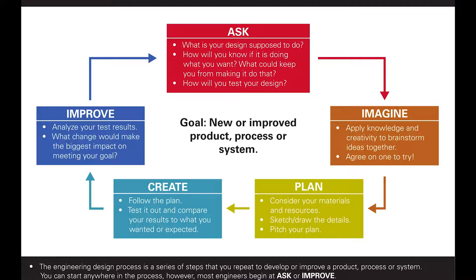Now we need to plan — try drawing or creating 3D models through different programs, and try to gather all the required materials. For instance, concrete aggregates, molding materials, and tools like buckets and trowels. And now we can create the canoe — build it according to your plans and try to stick to them as much as possible, so you know what to change the next time around.